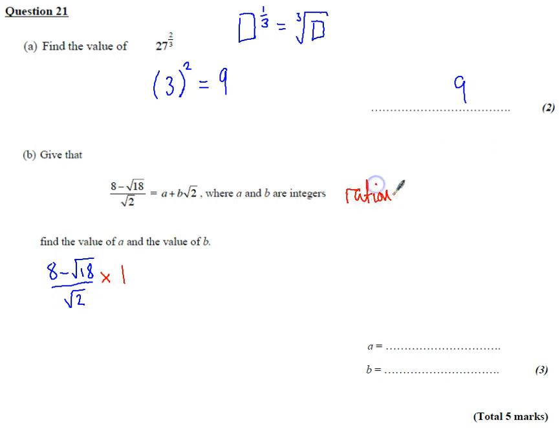I want to get rid of this square root 2 on the bottom without changing the value overall. So I'm going to choose root 2 over root 2 as my value of 1.